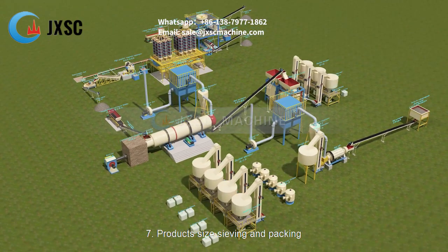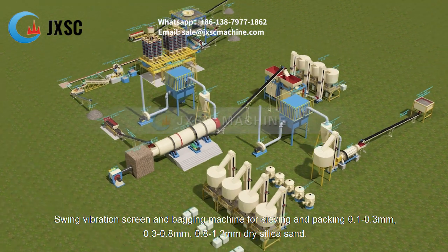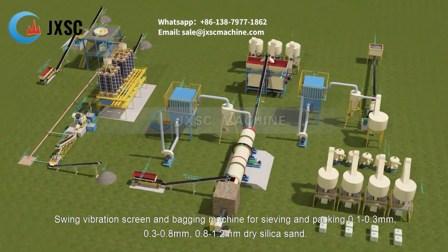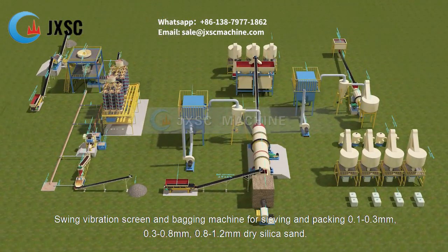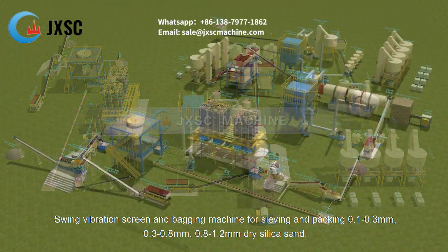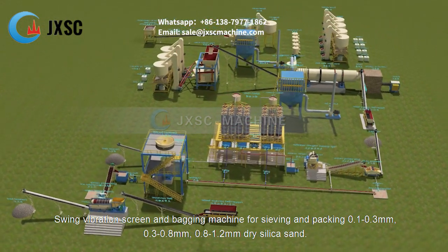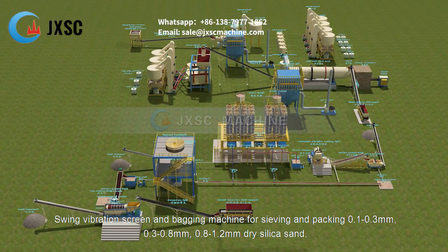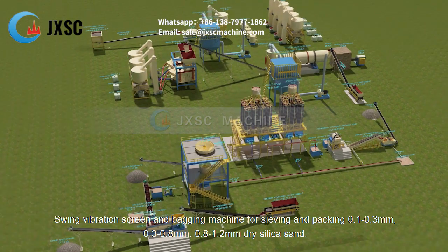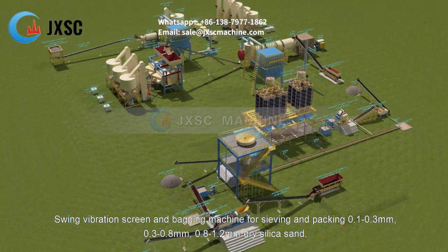7. Product size sieving and packing. Swing vibration screen and bagging machine for sieving and packing 0.1 to 0.3 millimeters, 0.3 to 0.8 millimeters, and 0.8 to 1.2 millimeters dry silica sand.